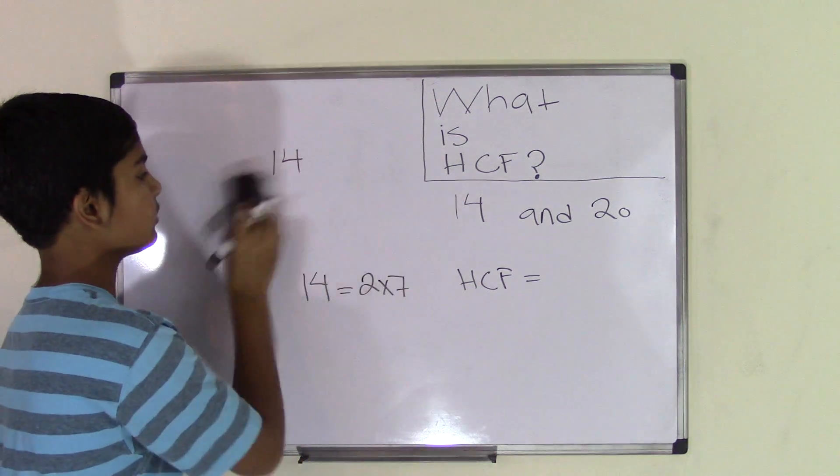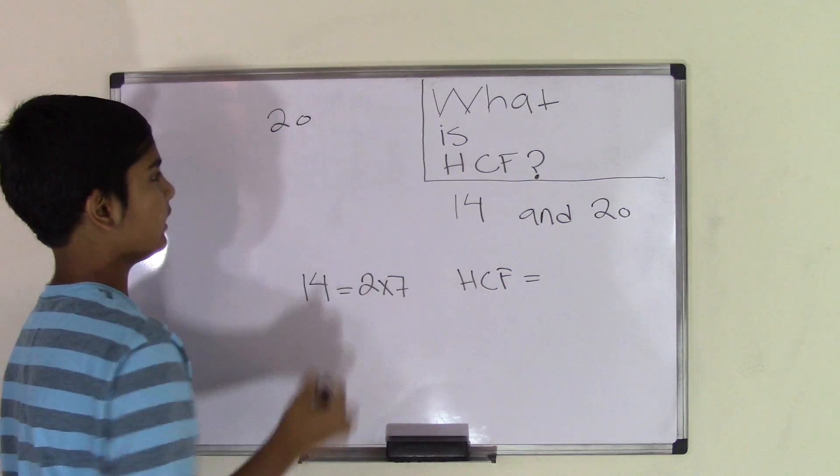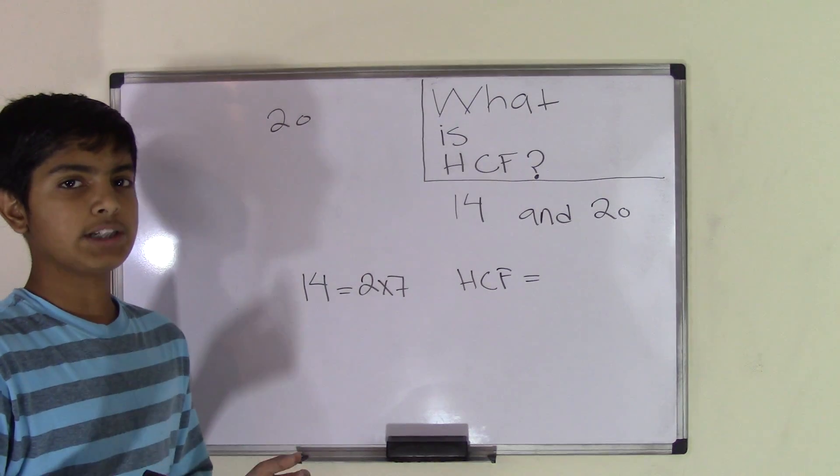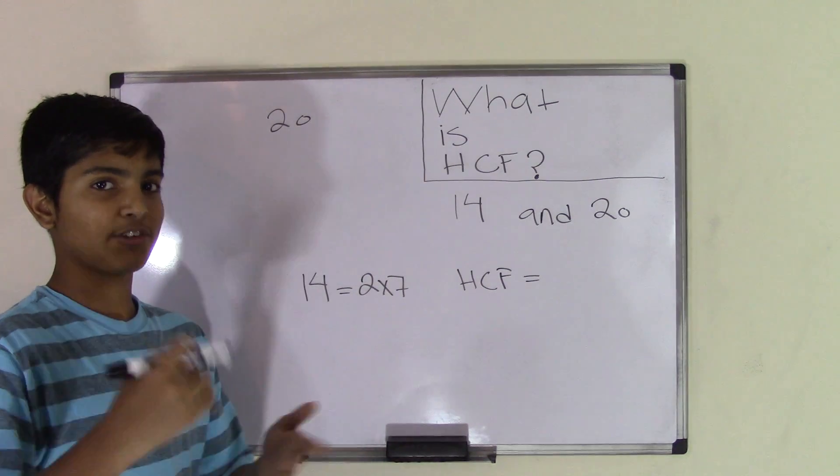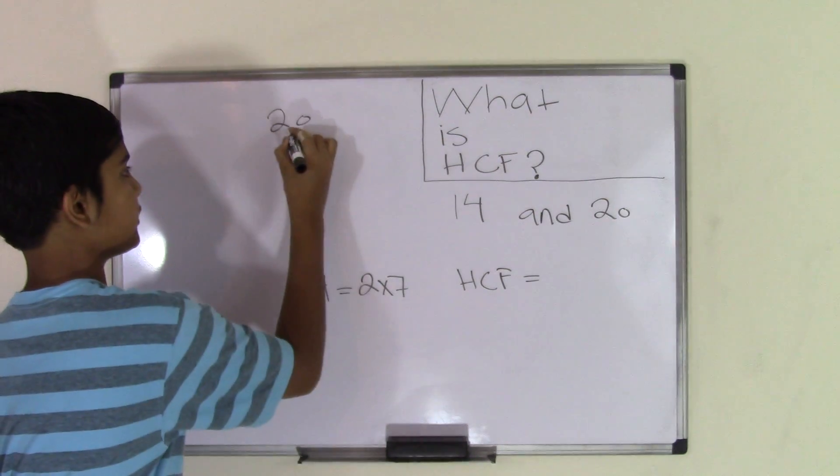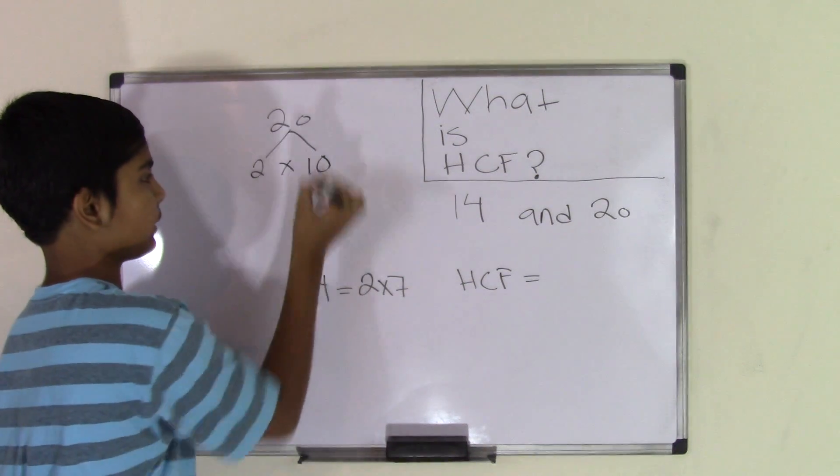Now let's find the factors of 20. So we write the number 20 down, and we're going to start off by the number 2. Again, 1 times 20 is going to give us 20, and we're going to keep going for infinity. We don't want that. So we start off with the number 2. We know that 2 times 10 is 20.